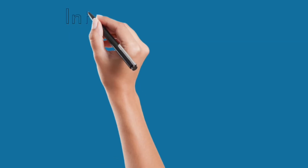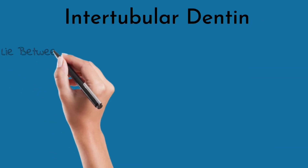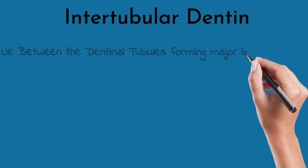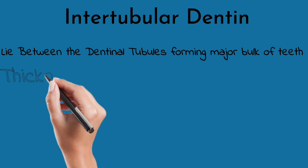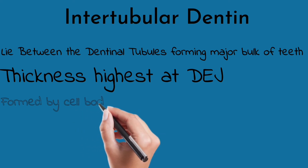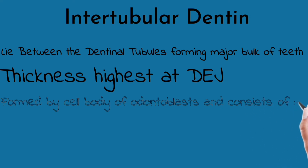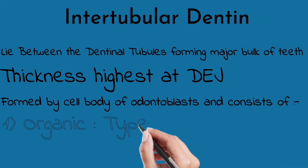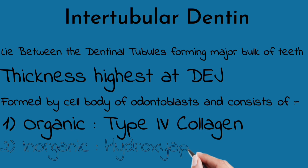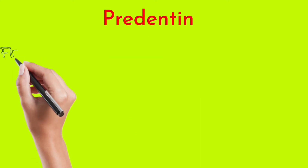Intertubular dentine lies between the dentinal tubules and forms the major bulk of the tooth. Its thickness is highest at the dentino-enamel junction — a very important question. It is mainly formed by the cell bodies of odontoblasts and consists of Type 1 collagen. The inorganic component is hydroxyapatite crystals.